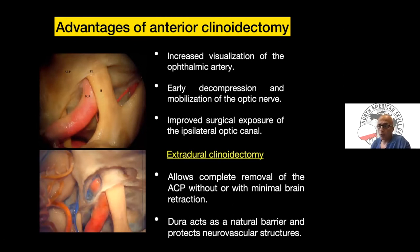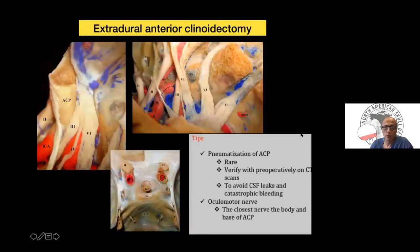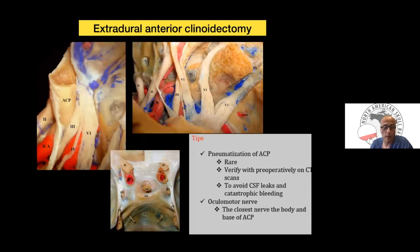For extradural clinoidectomy, my preference most of the time is the extradural approach, which allows complete removal of the anterior clinoid process with minimal or no brain retraction. The dura acts as a natural barrier protecting the brain. You need to be aware of pneumatization of the anterior clinoid process and erosion by aneurysms — if there is a paraclinoid aneurysm, you must study this preoperatively rather than being unprepared during surgery.